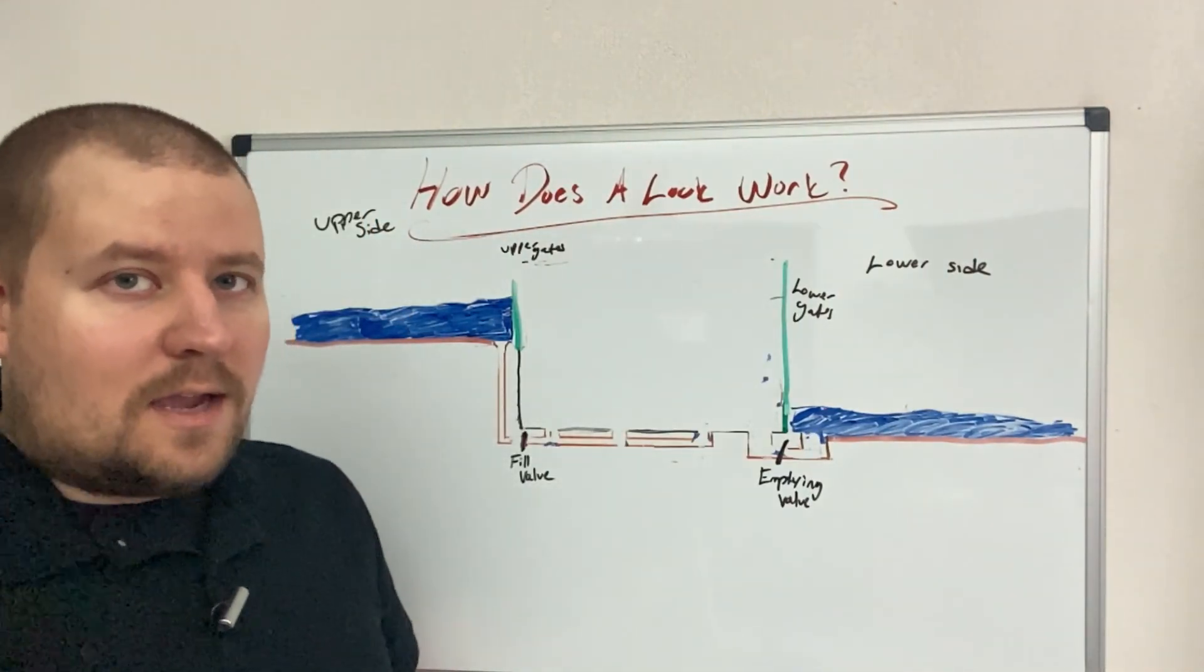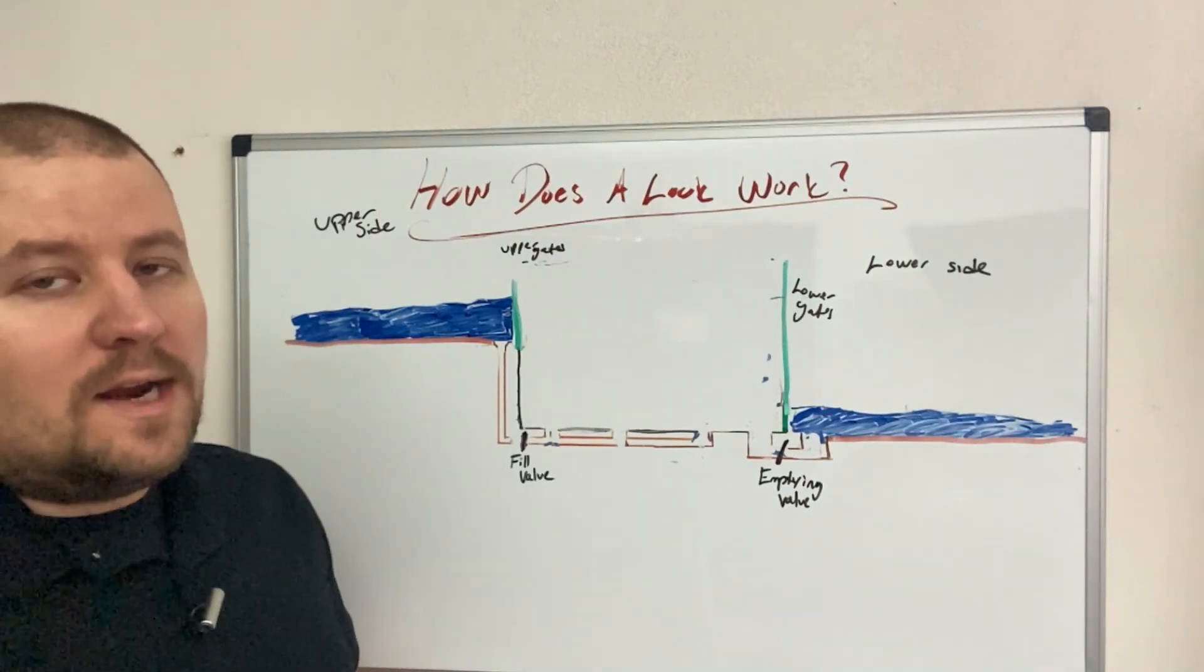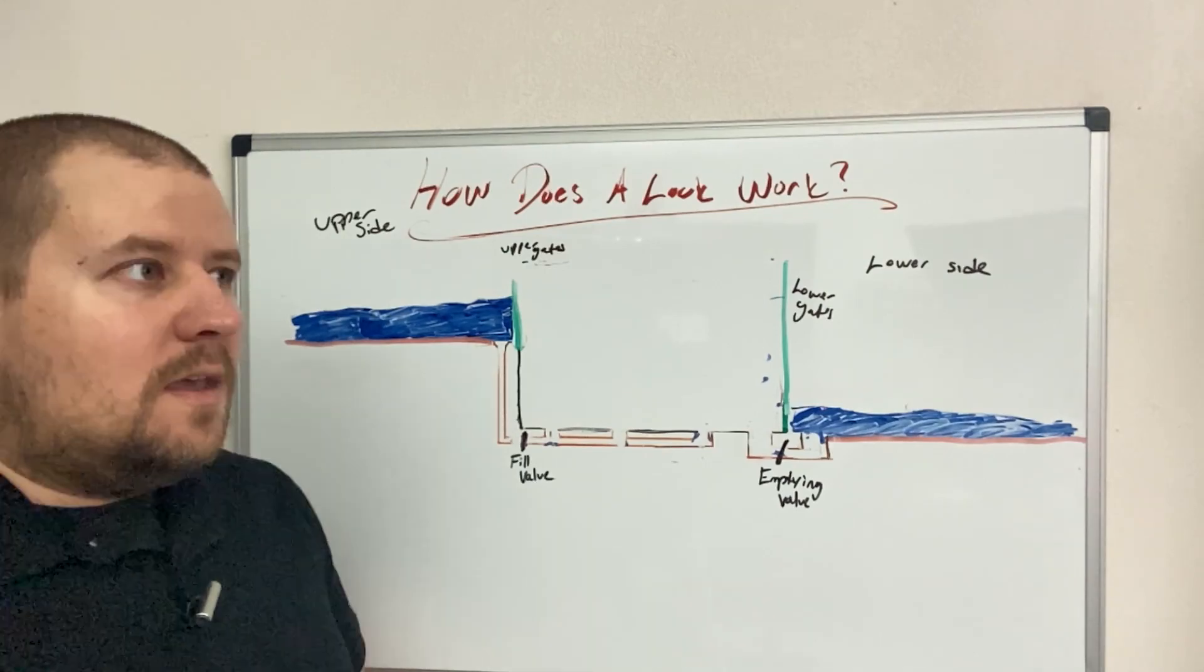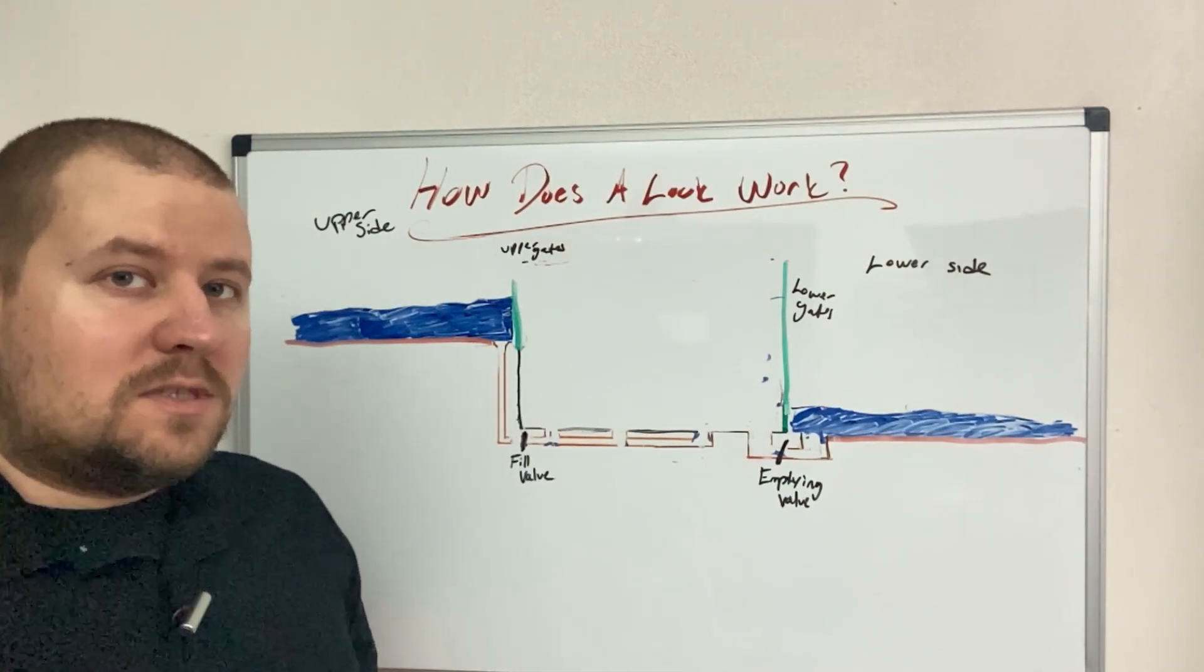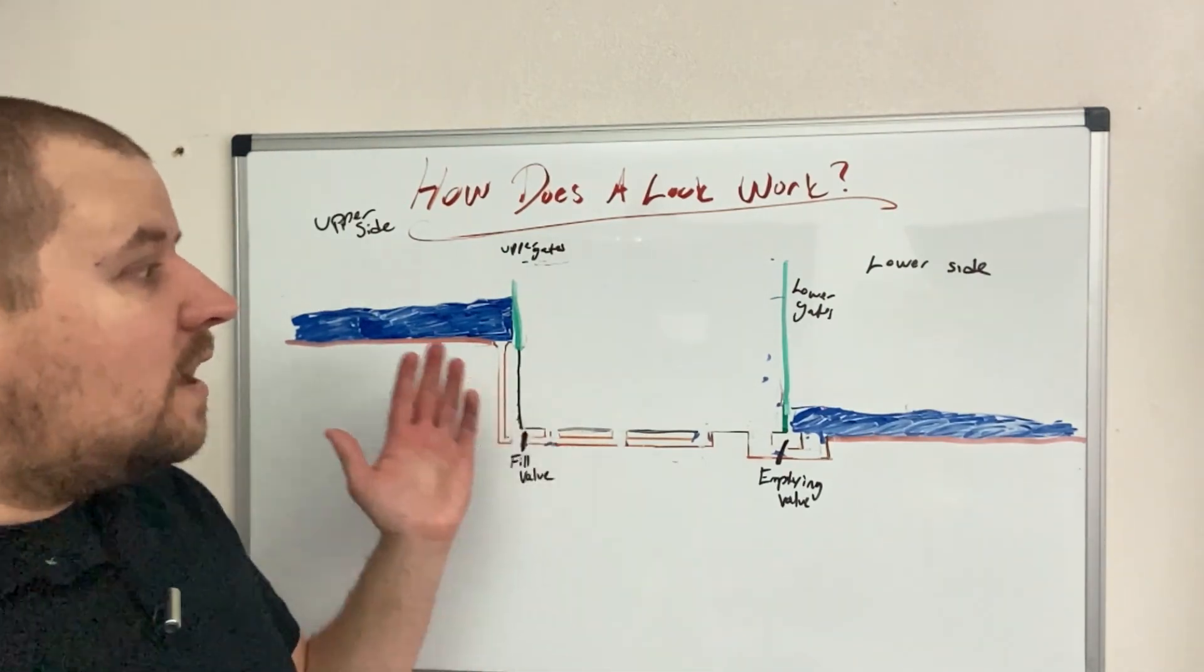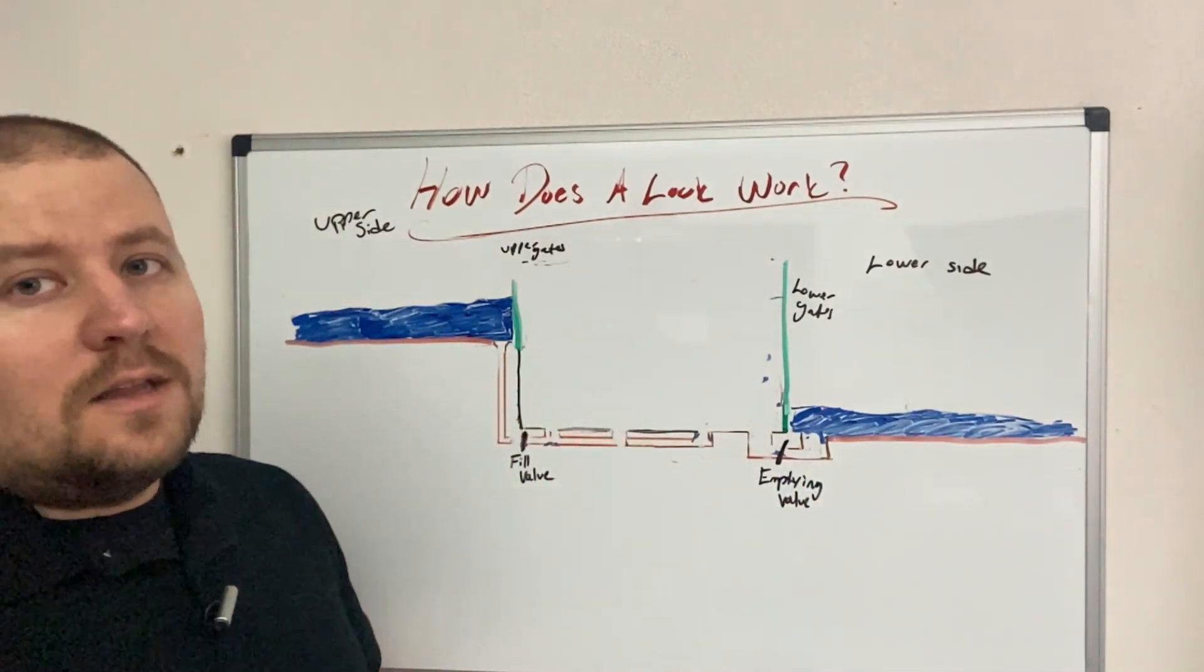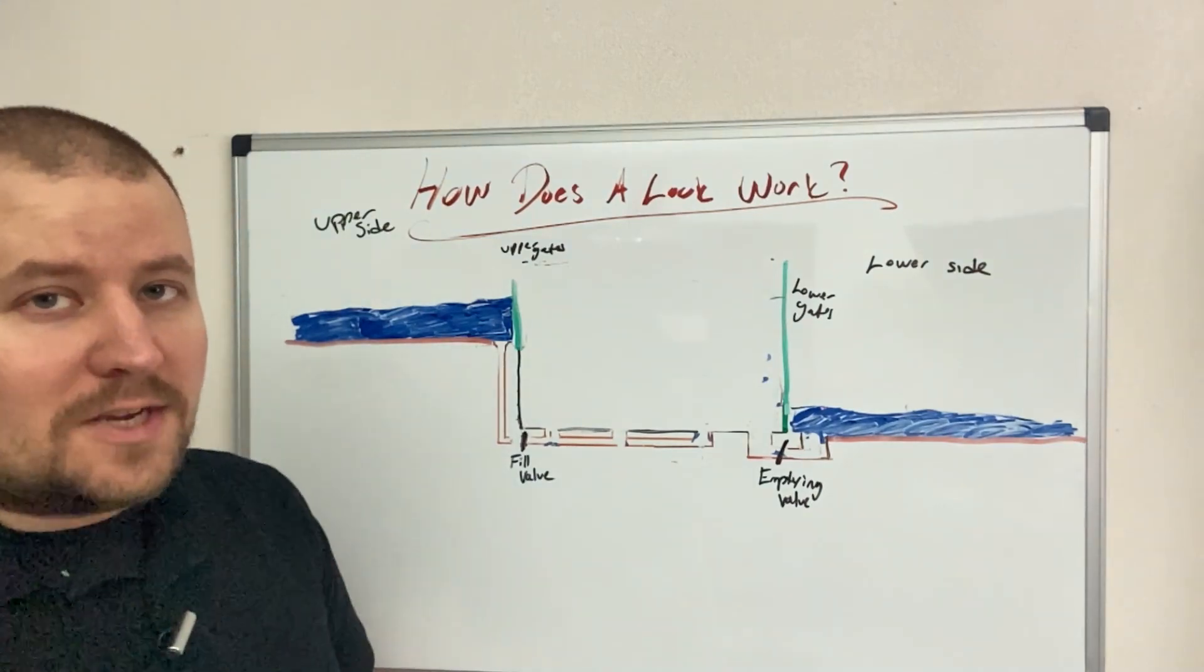There are already people staffing the locks. They are there 24-7. The entirety of the lock system works on the principle of gravity, which is simply water's desire to head downhill, which is essentially what a lock is doing. It is just allowing water to go downhill in a controlled fashion.